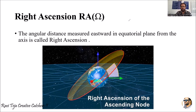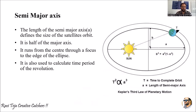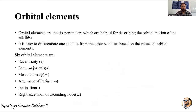Right ascension can also be abbreviated as RA. All six of these orbital elements are used to determine the position and velocity of satellites in an orbital plane, using the Earth's equatorial axis as reference. This concludes our overview of the six orbital elements.